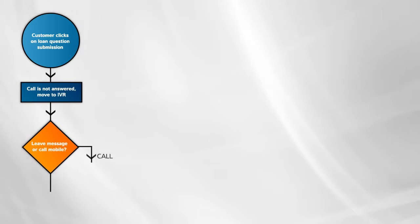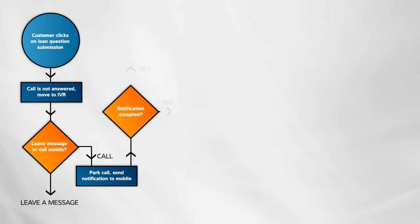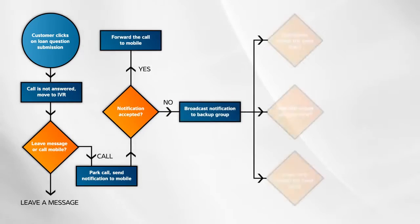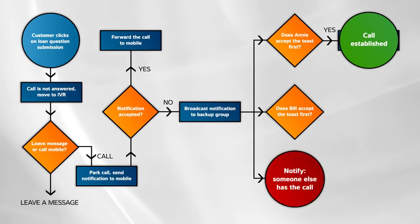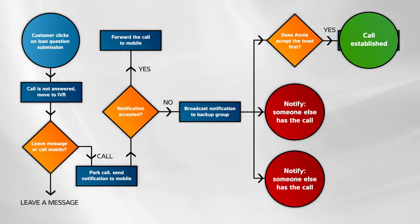The voice portal proposes that John contact Dimitri on his mobile. Since Dimitri is with another VIP customer, he denies the call, which is then rerouted to a backup group comprised of G-Bank loan advisors. Skype for Business enables the system to check the presence and availability of the backup group, whose members simultaneously receive the alert, greatly increasing the probability that John's call will be answered quickly by a qualified advisor.